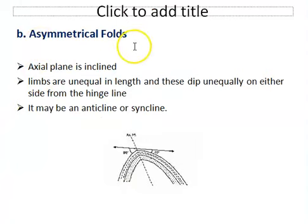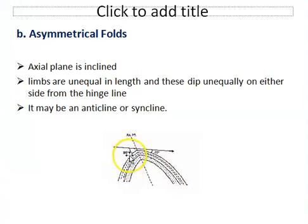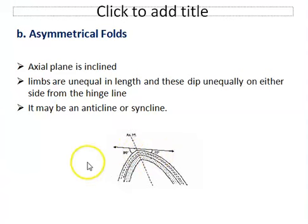Another fold type is the asymmetrical fold. In an asymmetrical fold, the axial plane is inclined and the limbs are unequal in length. As shown in the diagram, one limb is longer than the other, and the limbs dip unequally on either side from the hinge line — for example, one side may be 90 degrees while the other is 40 degrees. This type of fold may also be anticline or syncline.